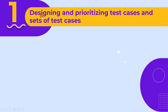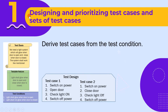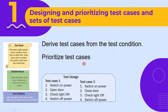The first main activity is designing and prioritizing test cases and sets of test cases. In the previous lecture, we saw how we derive test cases from the test condition. In the test design stage, we not only derive the test case, but we also prioritize them. This is what you need to remember: the first main activity is designing and prioritizing test cases and sets of test cases.